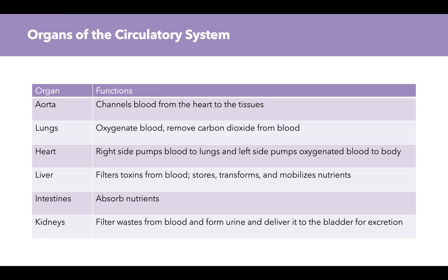The organs of the circulatory system include: the aorta, where blood is initially pumped out from the heart on its way to the tissues; the lungs, which oxygenate blood and remove carbon dioxide; the heart, which pumps blood to the lungs and then pumps oxygenated blood to the body; the liver, which filters toxins from blood and stores, transforms, and mobilizes nutrients; the small intestine, which absorbs nutrients; and the kidneys, which filter waste from the blood and form urine delivered to the bladder for excretion.